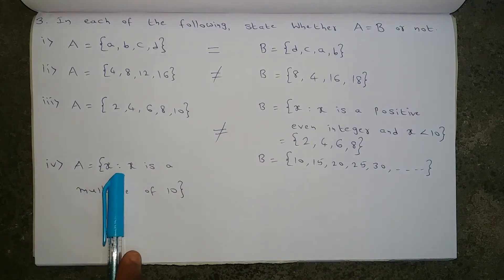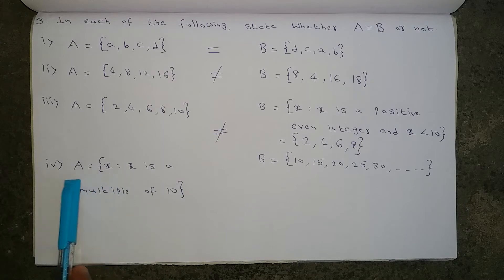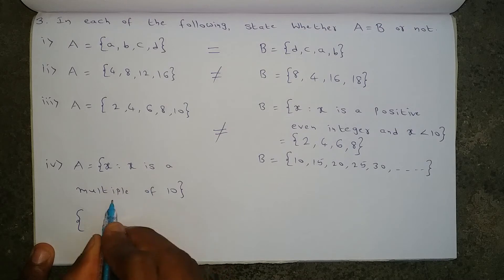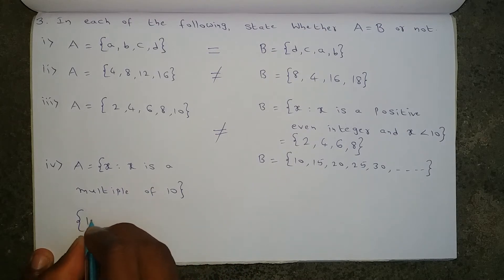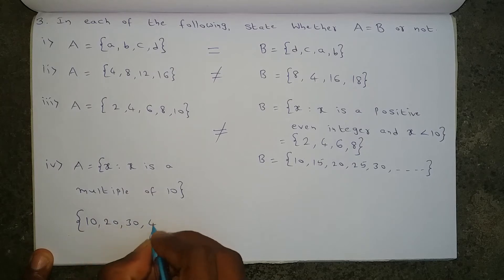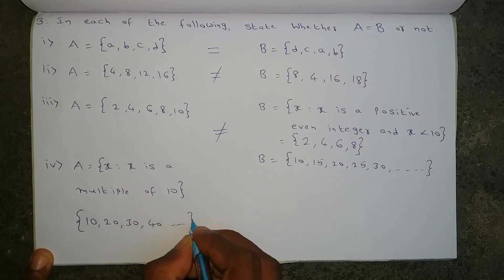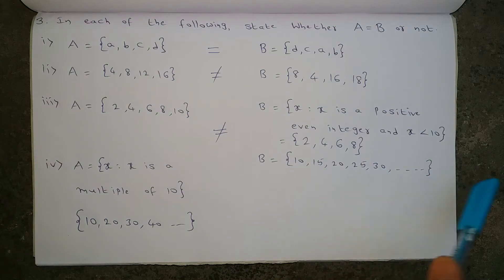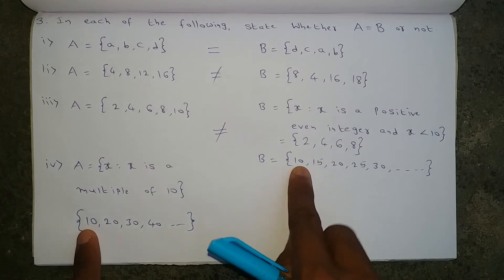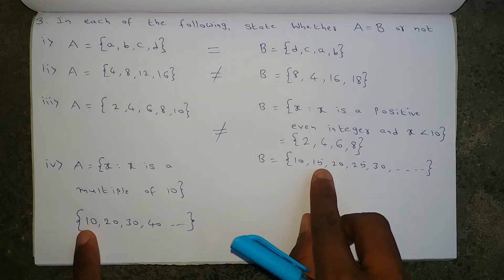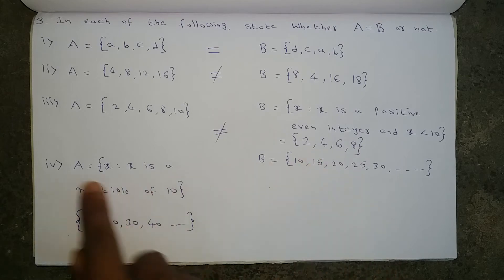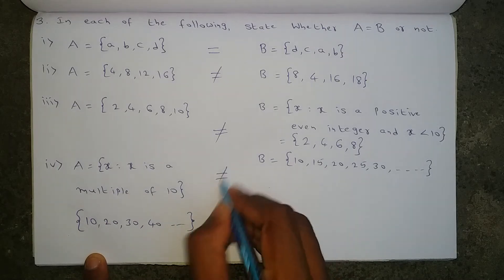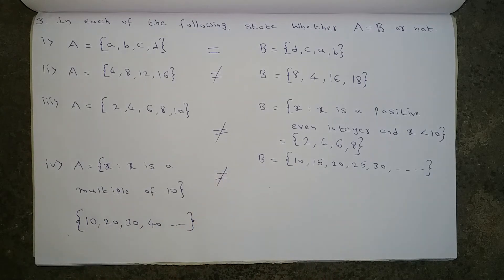Next, set A is X such that X is a multiple of 10. Converting to roster form: the multiples of 10 are 10, 20, 30, 40 and so on. Set B has 10, 15, 20, 25, 30 and so on. In set B, the number 15 is there but in set A, 15 will not appear because 15 is not a multiple of 10. So set A and set B are not equal to each other.